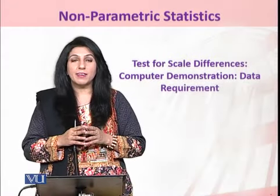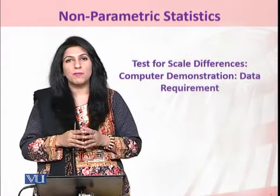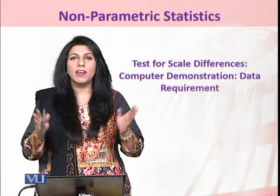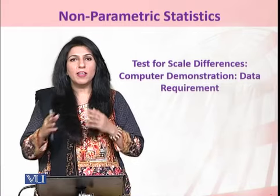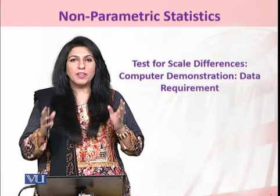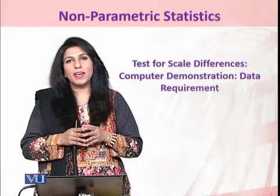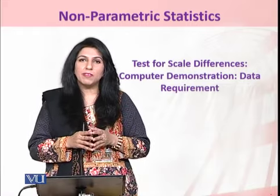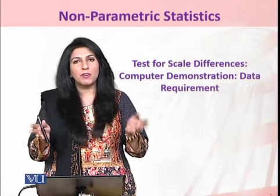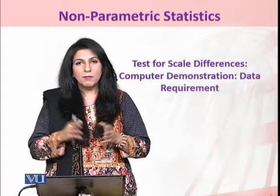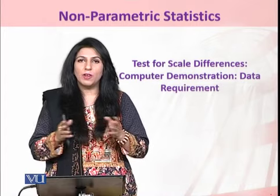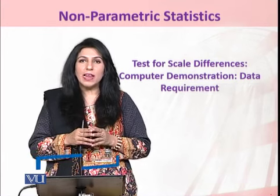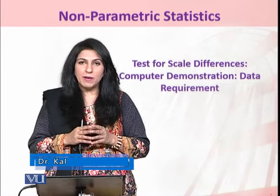If we have to compare the differences between two scale parameters — whether they are identical or there is a difference between them — we can make use of the Siegel-Tukey test, provided that the two random samples are not following normality. If the two random samples are normal, we can make use of the F-test to compare the equality between the two scale parameters.